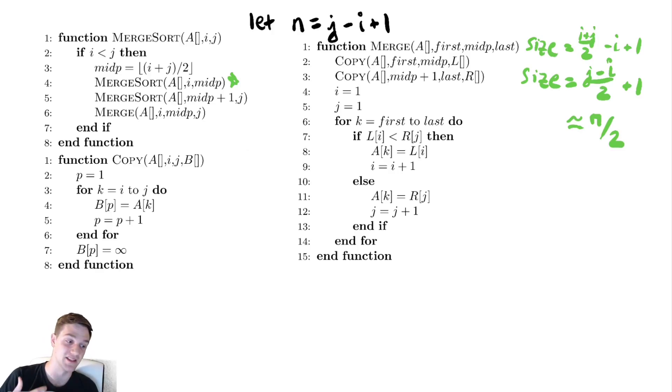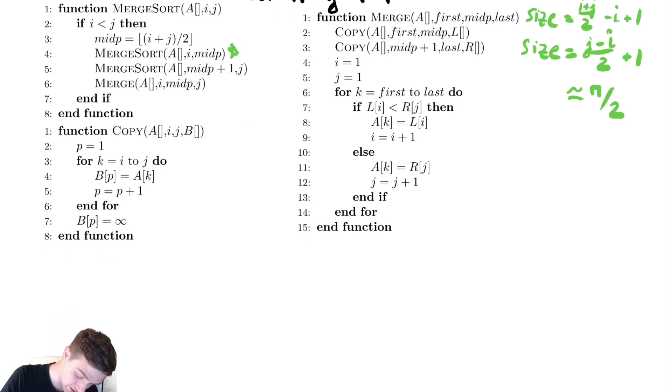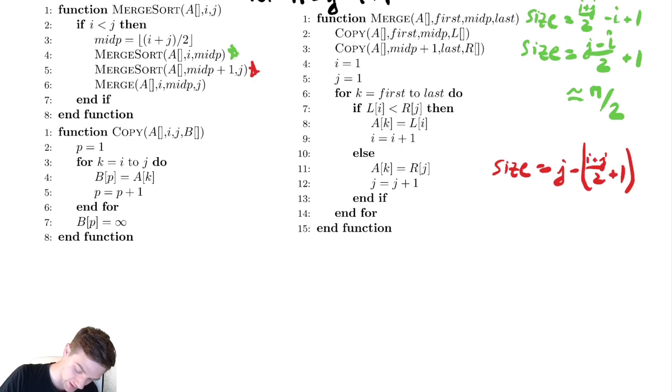We're not going to do the sort of analysis we did with the binary search, we're just going to be approximating how big that is. Similarly, let's put a star next to the second recursive call. The size of that recursive call is j minus midp plus one which is i plus j over two plus one. And then plus one. This equals, similar to what we saw before, j minus i over two. But this time we get that the plus one and the minus one cancel. And again we're just going to say that's approximately n over two.